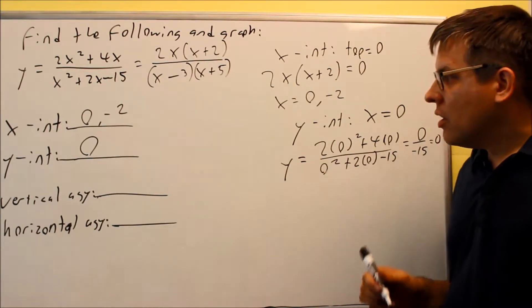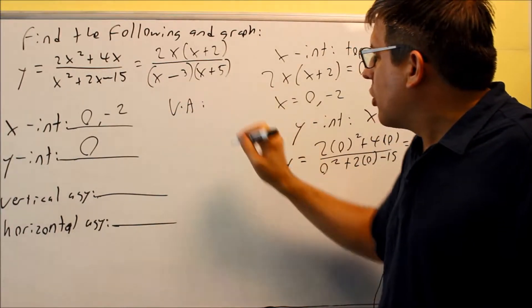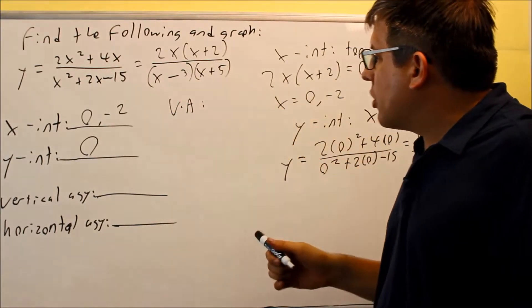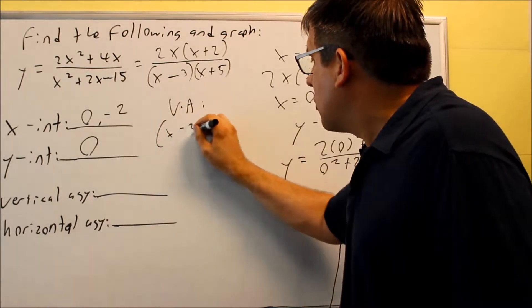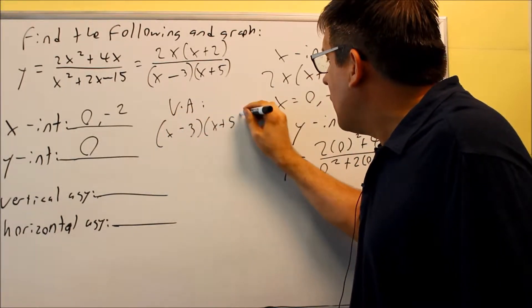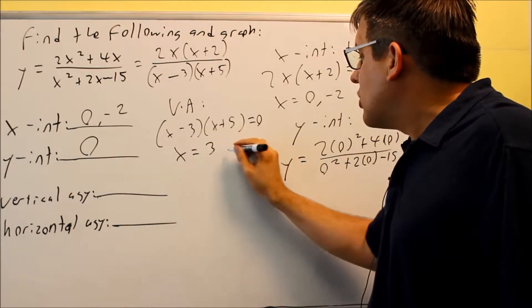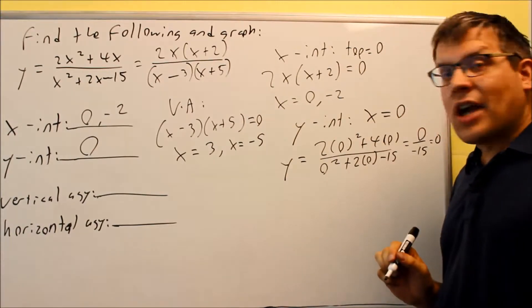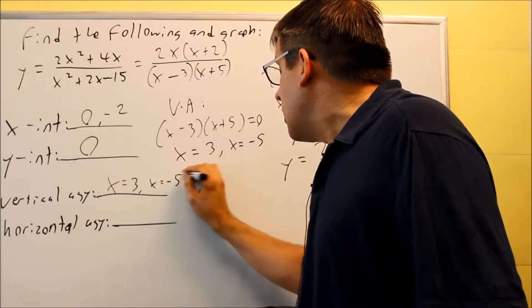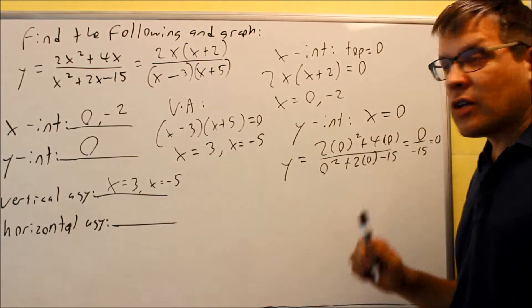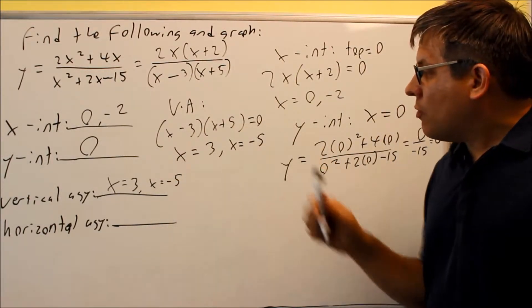For the vertical asymptote, you set the bottom equal to zero. So (x minus 3)(x plus 5) equals zero, and solving gives x equals 3 and x equals negative 5. Those are your two vertical asymptotes — written as x equals 3 and x equals negative 5.